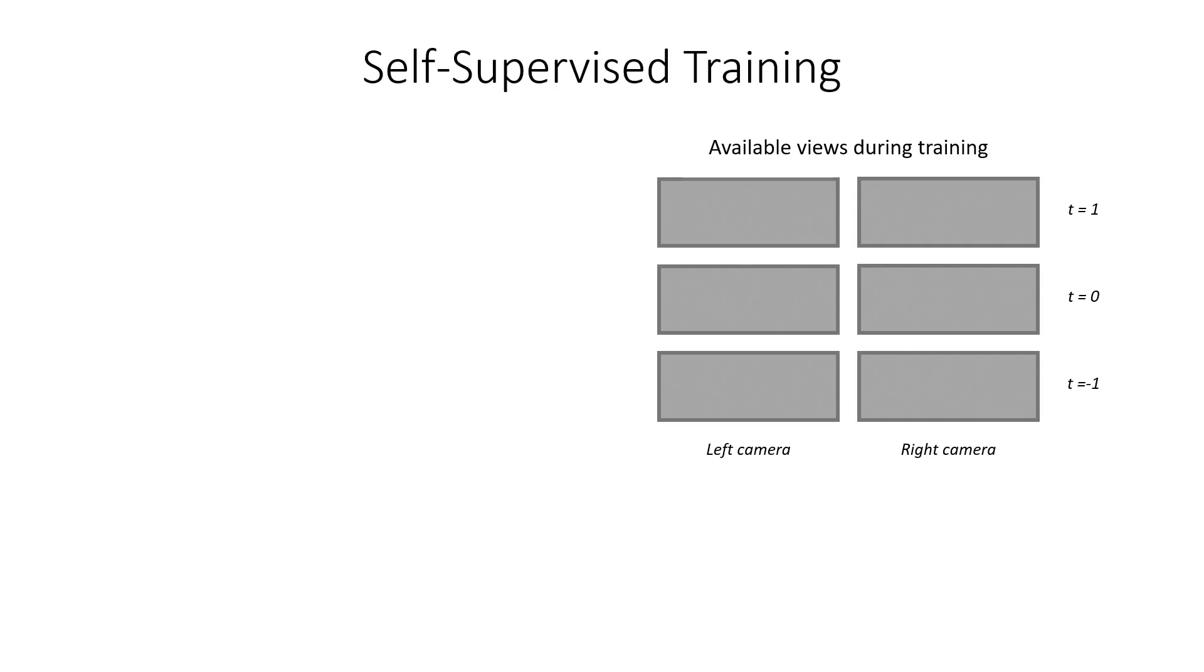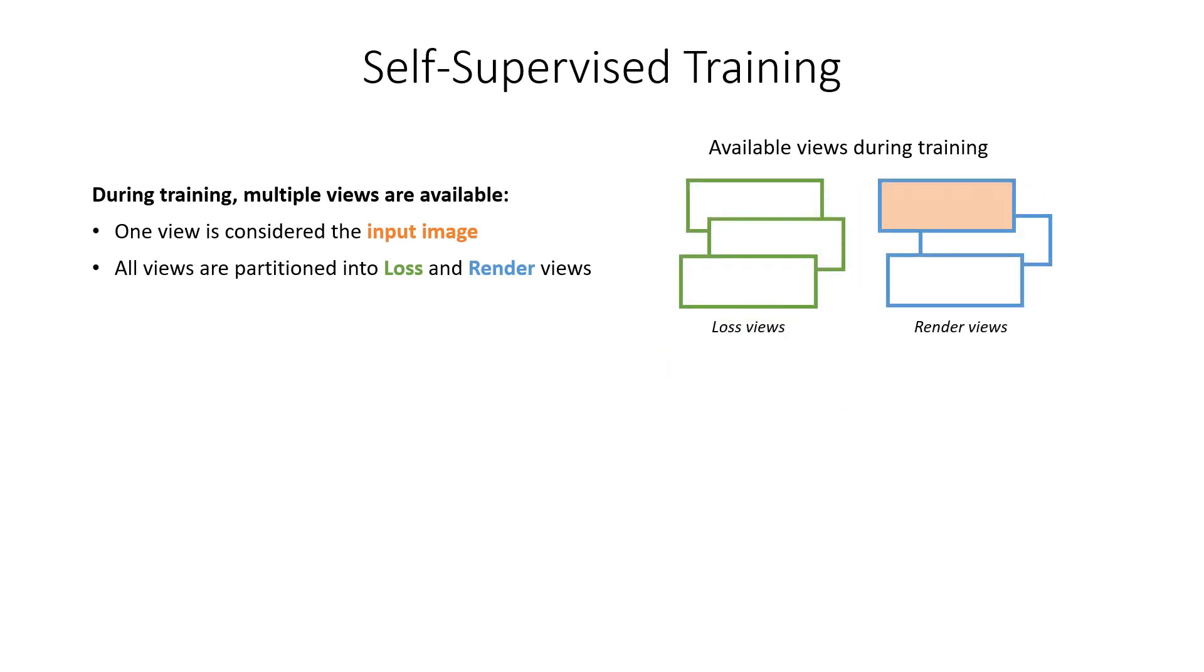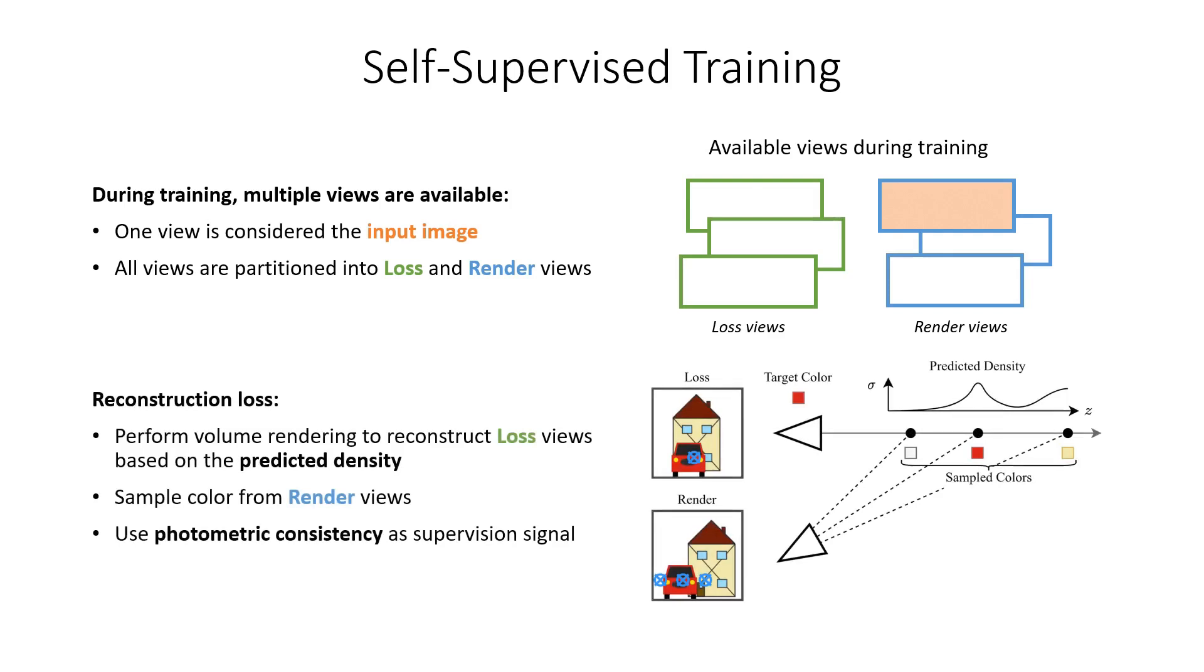We train our method through a new self-supervised reconstruction loss. During training, we have available video data with one or multiple views per time step. A single sample consists of frames from a few consecutive time steps, for example three. One of the frames is considered the input frame from which we reconstruct the scene. We partition all frames into two sets, lost frames and render frames. We perform volume rendering to reconstruct the frames in the lost partition. Color is sampled from the frames of the render partition using the predicted densities.